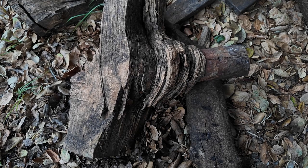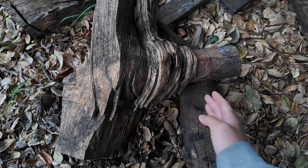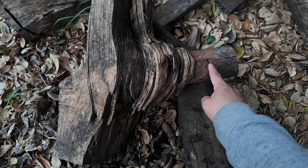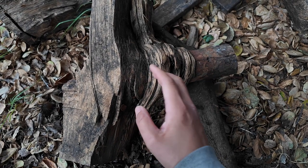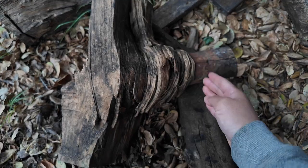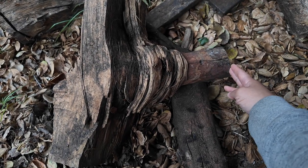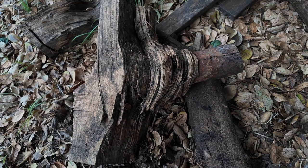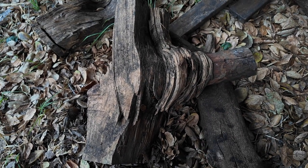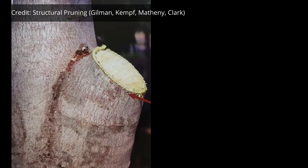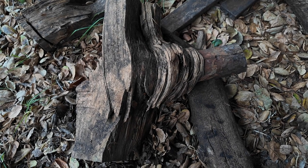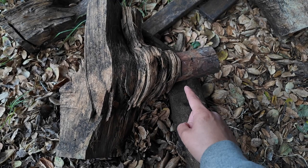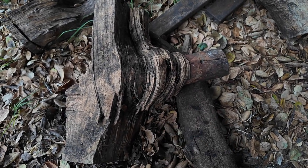On trees where the branch collar isn't obvious, you might be tempted to leave a much longer stub to make sure you're not cutting into the stem. But if you leave a really long stub, it takes a long time for the stem to grow over that stub and finally close over the wound. When you're making a proper cut on a branch that has a longer branch collar, it's going to look like you're leaving a section as a stub, especially to a client expecting a flush cut. It's important to understand this branch collar concept so you can explain that you're making the cut at the right place and why.